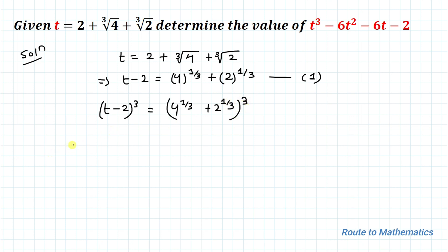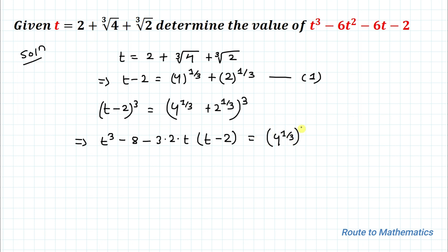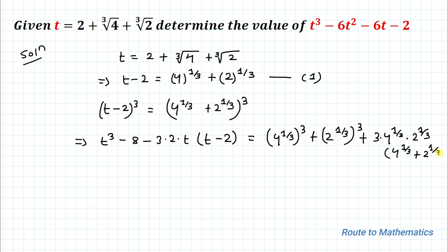Now applying the algebraic identity (a minus b) cubed on the left hand side and (a plus b) cubed on the right hand side. We have t cubed minus 8 minus 3 times 2 times t times (t minus 2) equals (4 to the power 1/3) cubed plus (2 to the power 1/3) cubed plus 3 times 4 to the power 1/3 times 2 to the power 1/3 times (4 to the power 1/3 plus 2 to the power 1/3).